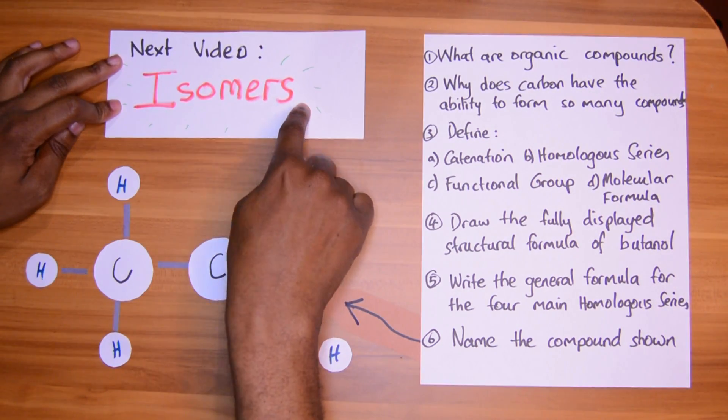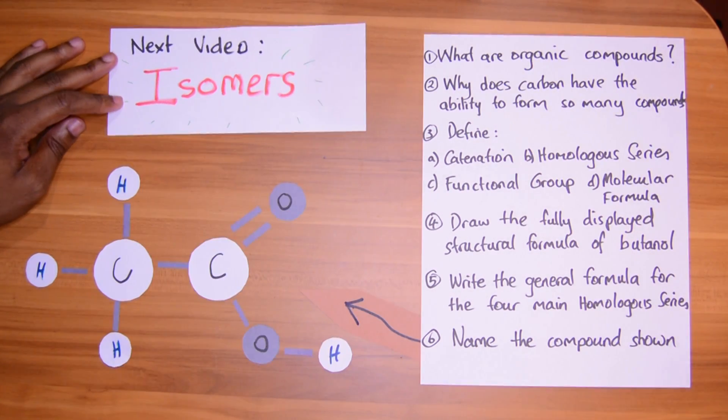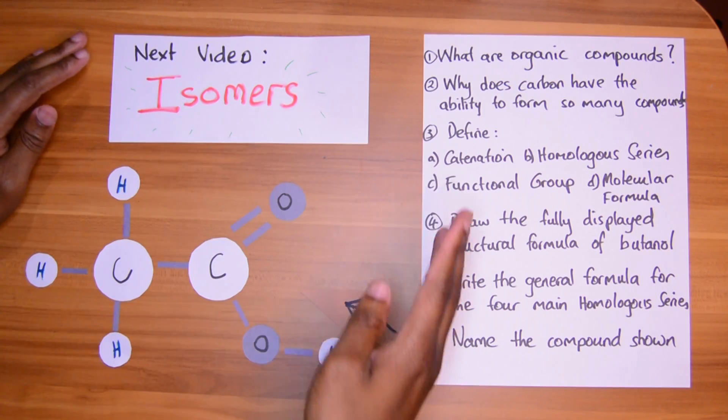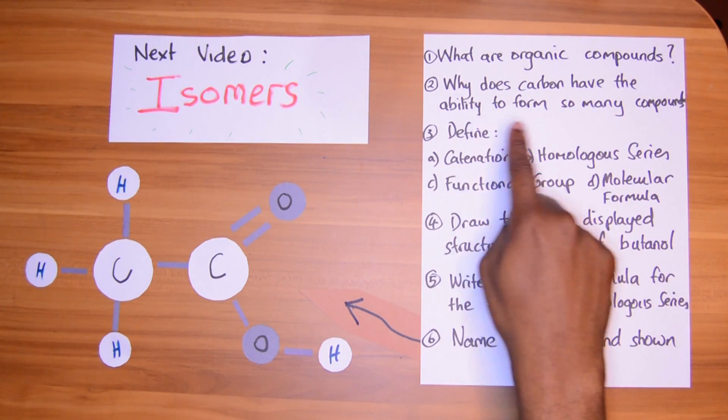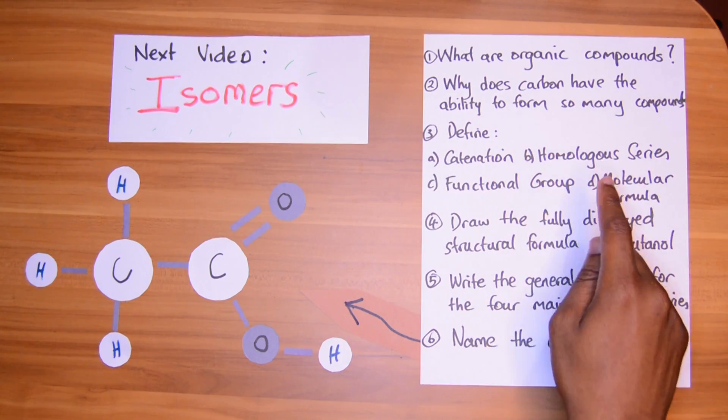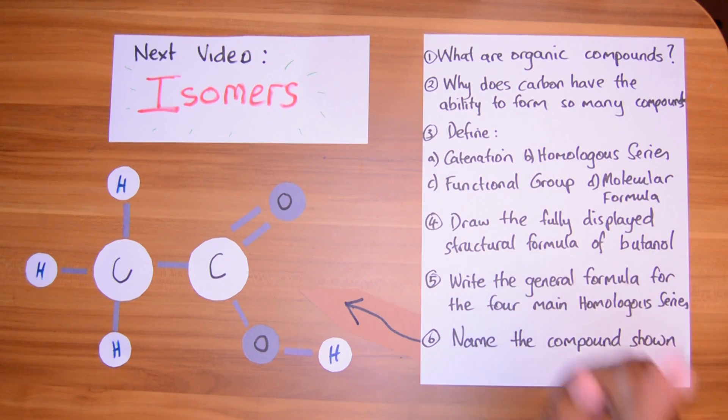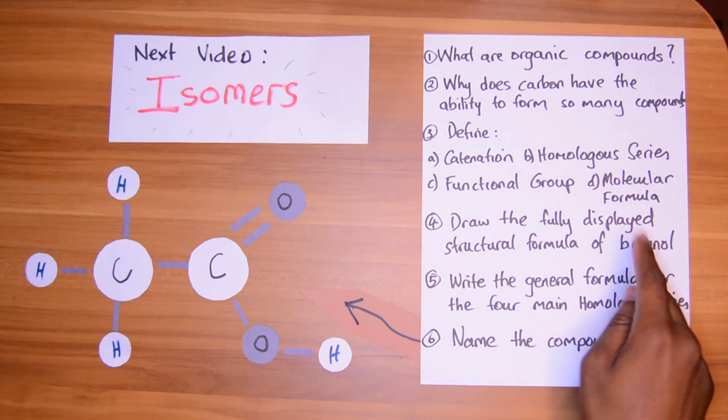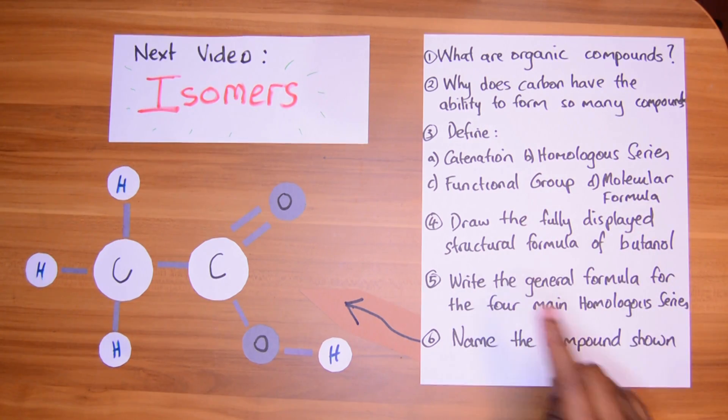Before we go to the next video, which is about isomers, this is a nice topic, we'll go through how we name isomers and stuff like that, try these questions before you go to that next video: What are organic compounds? Why does carbon have the ability to form so many compounds? Define catenation, homologous series, functional group, molecular formula. Draw the fully displayed structural formula. And write the general formula for the four main homologous series. And name this compound shown here. The questions are easy. Don't put it off.